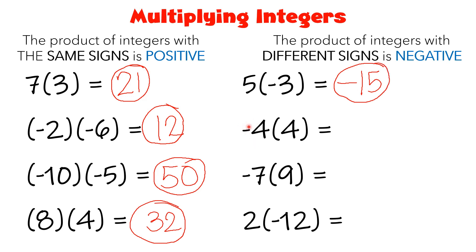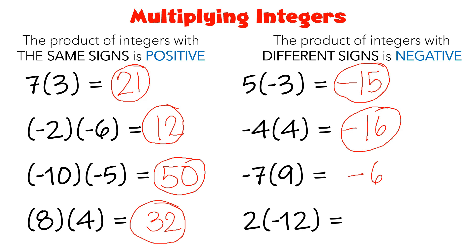How about this one? Negative 4 times positive 4. They have different signs, so your answer must be negative — that gives negative 16. Another one: negative 7 times 9. Different signs, so you have negative 63.